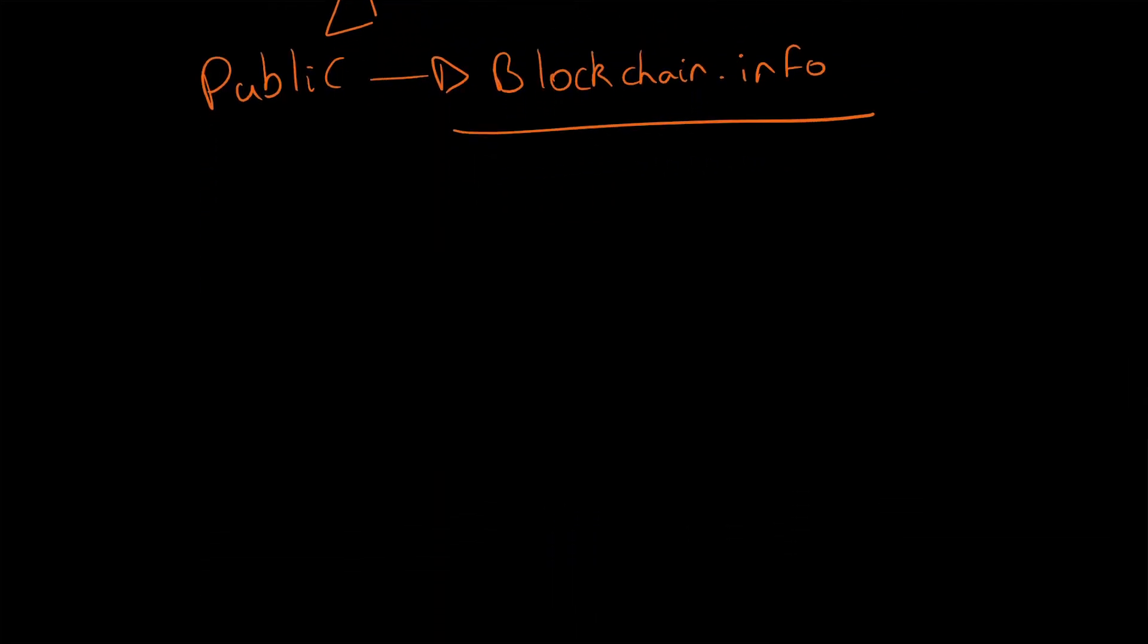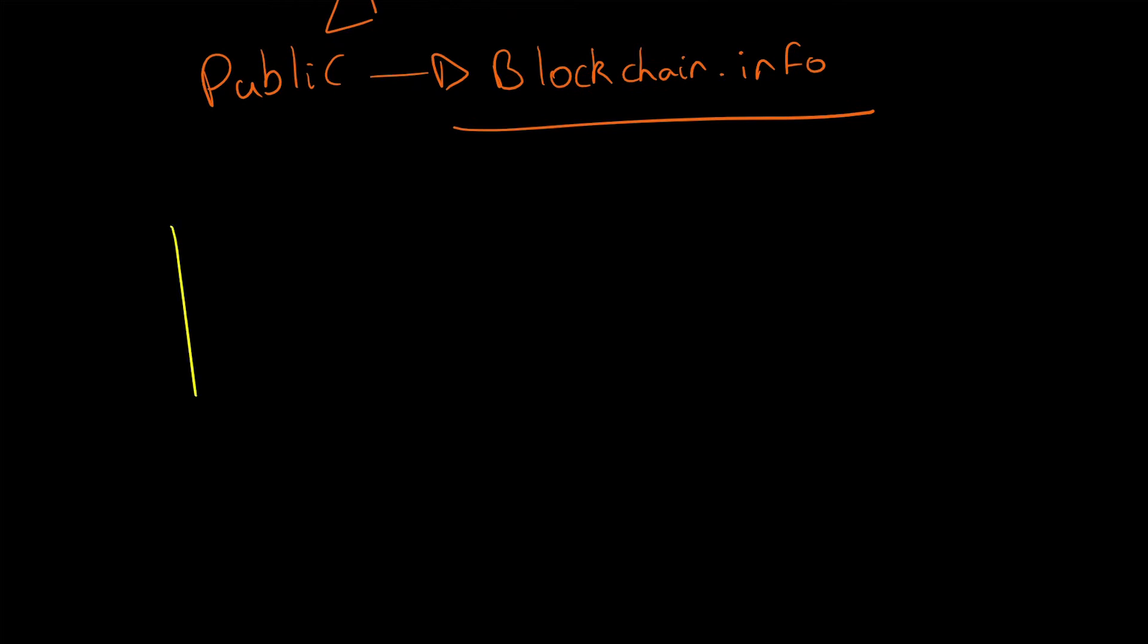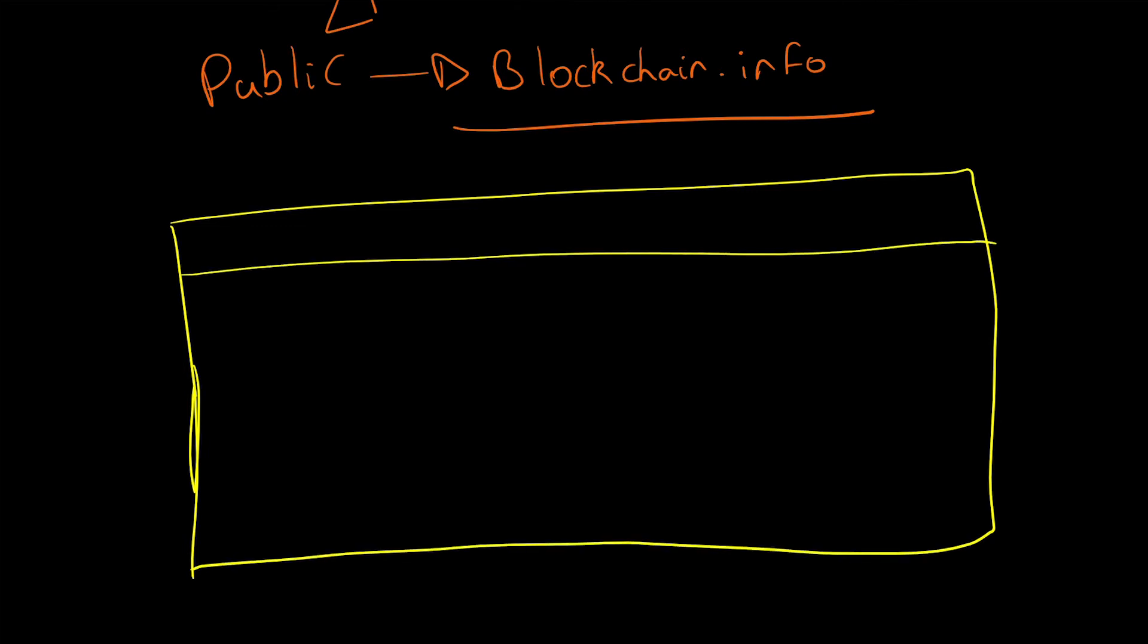So the ledger might look like this. The structure of it, this is obviously a very small ledger in comparison to the actual size, might look something like this. So we might have an ID column, we might have a sender column.